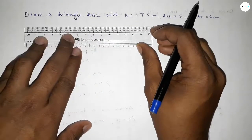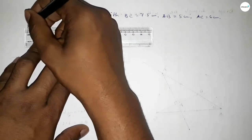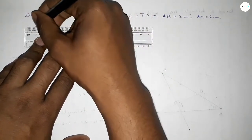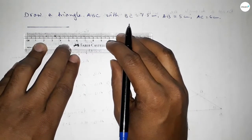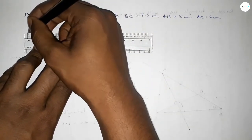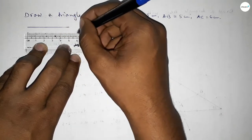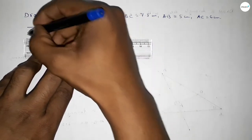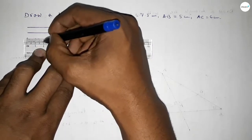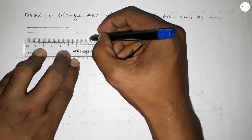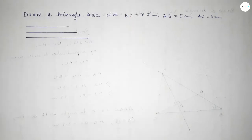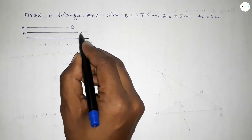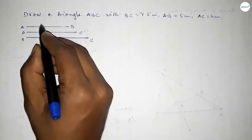First of all, drawing here a line of length 5 centimeters — so this is five. Next, drawing here a line of length 6 centimeters — so this is six. And last, drawing here a line of length 7.5 centimeters — so this is seven point five. This one is AB, this is AC, and this one is BC.